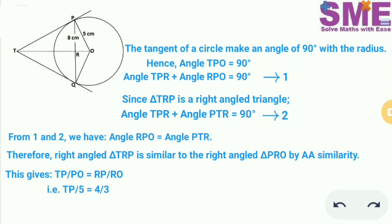So we substitute the values of PO as 5, RP as 4, and RO as 3. So we get TP is equal to 20 upon 3 which is roughly equal to 6.67 cm.